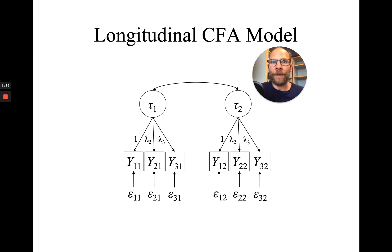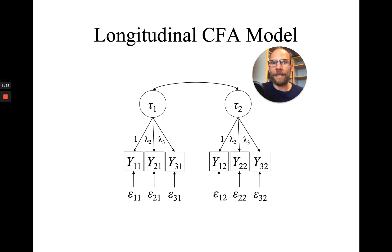This model implies that there is unidimensionality of the indicators at a given time point. The only way that associations of the indicators across time are explained in this model is via their loadings on the latent factors — tau1 and tau2 — and then the covariance of those factors across time.